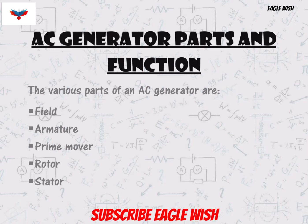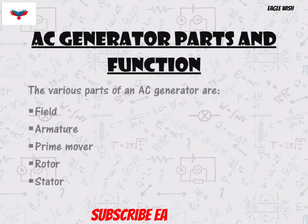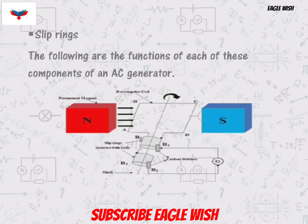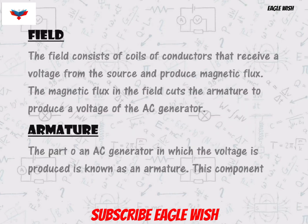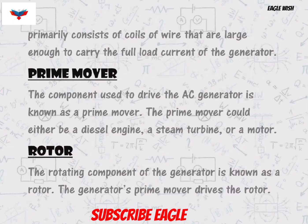we will mention the parts of the AC generator and their functions. Parts of the AC generator include: field, armature, prime mover, rotor, stator, and slip rings.